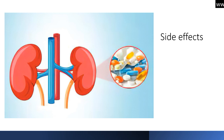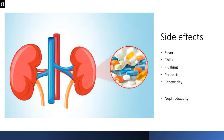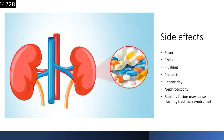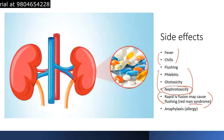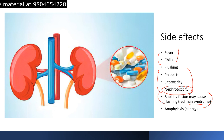Vancomycin side effects range from fever, chills, flushing, and phlebitis to ototoxicity and nephrotoxicity. Rapid IV infusion can cause flushing known as Red Man syndrome. Nephrotoxicity may form if it is used for a longer duration. Anaphylaxis — severe allergic reaction — can be life-threatening if the allergy is not tested beforehand. It is always advised to test for allergy against vancomycin before starting its use.